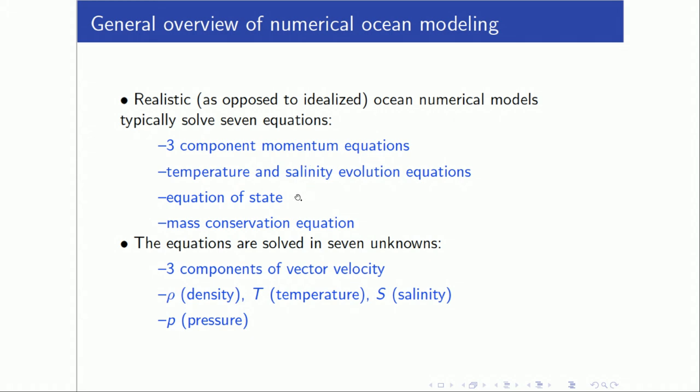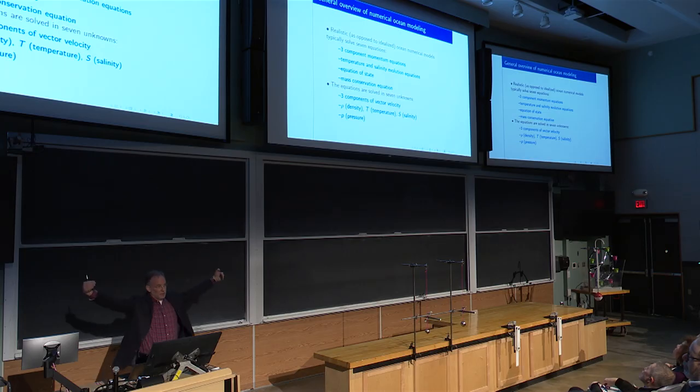The equation of state is way more complicated than the ideal gas law — it's a really complicated equation that people make their entire career out of looking at the physical chemistry of seawater. I am not one of those people. Then there's also a mass conservation equation — if tidal currents are going one way, sea level is going to go up; if tidal currents are going the other way, sea level is going to go down. So if you count up: three, four, five, six, seven equations, and you have seven unknowns — the three components of vector velocity, the density, and then the other thermodynamic variables. In principle, you can do this.